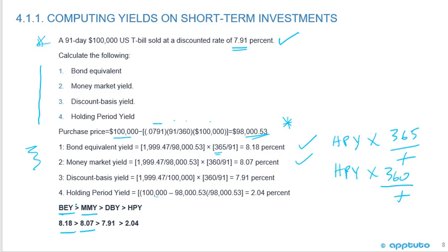This is a good consolidator slide. The discount basis yield uses the discount over face value, not purchase price. Since face value is more than purchase price, the discount basis yield is less than the money market yield — the denominator is the face value 100,000, not the purchase price. The holding period yield is ending minus beginning divided by beginning, giving 2.04%, which is the smallest amount.